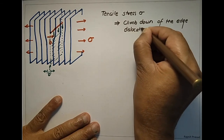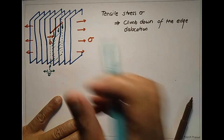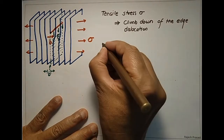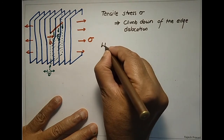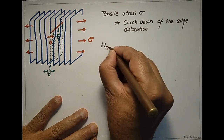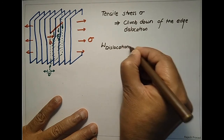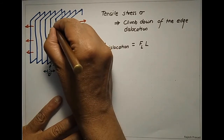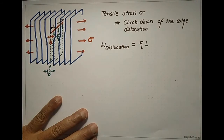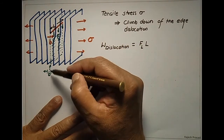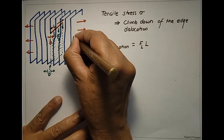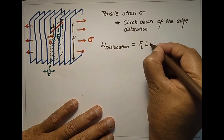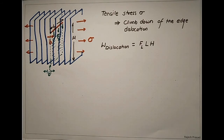For the edge dislocation, the force FL which is acting on the dislocation line — this force FL per unit length is acting downwards. We can calculate the work done during the dislocation motion. The work done on the dislocation is force per unit length FL times the length of the dislocation line L, times the displacement — how much the dislocation moves down. So if the dislocation moves down a height H, then the work done on the dislocation line by this force is FL · L · H.